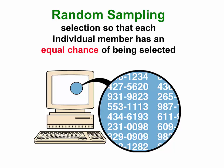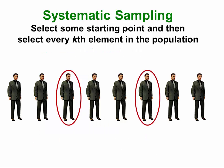Systematic sampling is the type of sampling used at the United States, Mexican, and Canadian borders. Every tenth car or every seventh car is by law asked to pull over and be inspected. The same type of sampling is used at sobriety checkpoints — you can be pulled over even though you don't look like you're drunk, simply because you're the fifth car in the line.